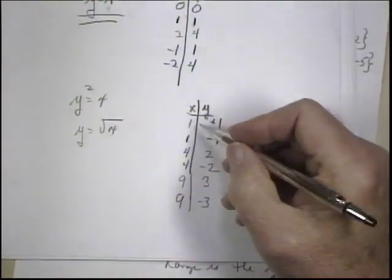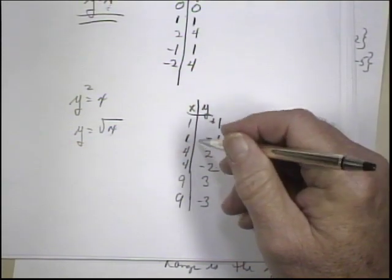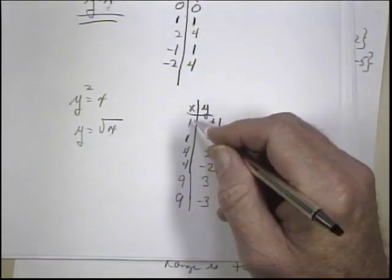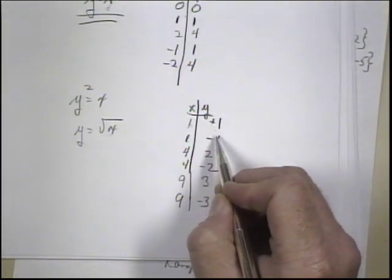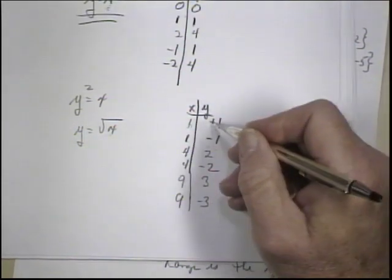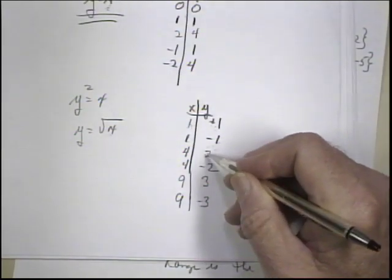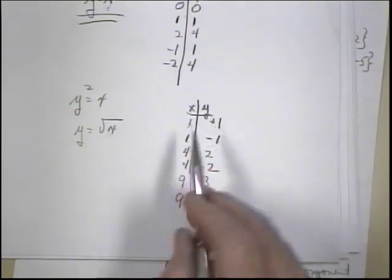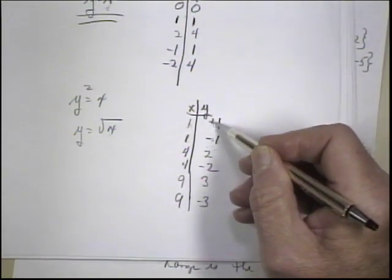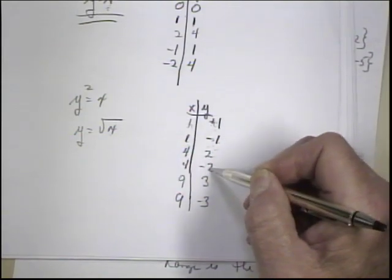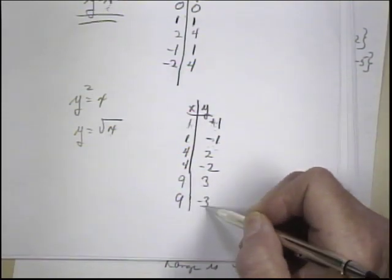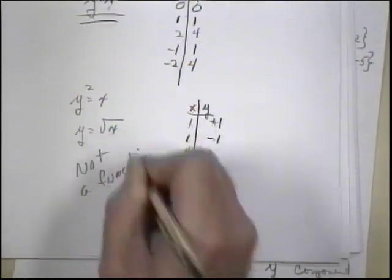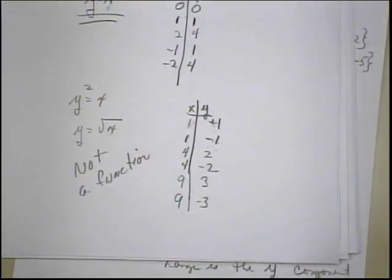What about y squared equals x? The definition says no two ordered pairs have the same first component and different second components. But here we have different first components each generating two different values for the second component: plus 1 is not the same as negative 1, plus 2 is not the same as negative 2, plus 3 is not the same as negative 3. So here we have the same x value generating two different y values. This is not a function.